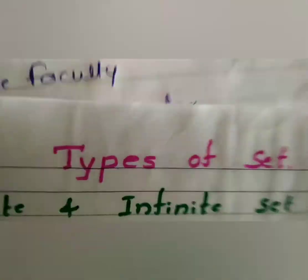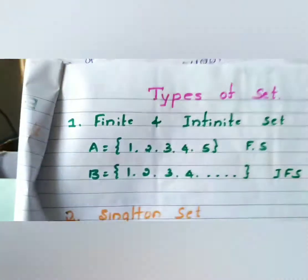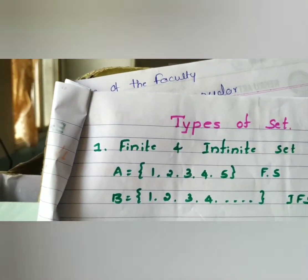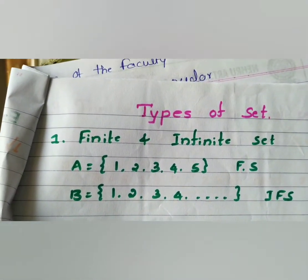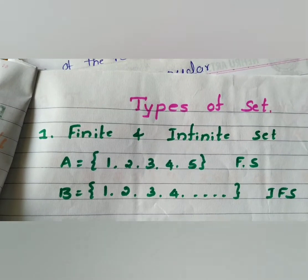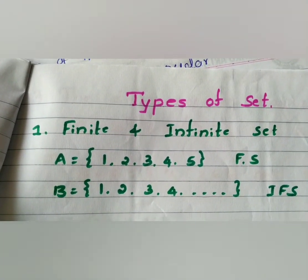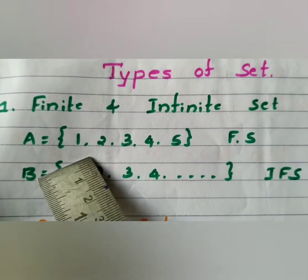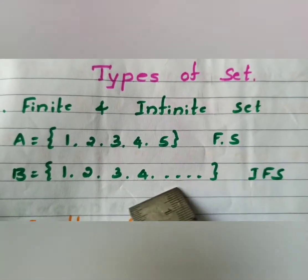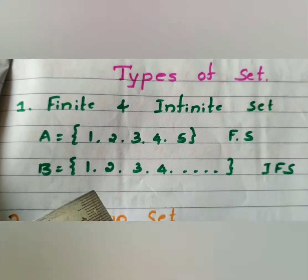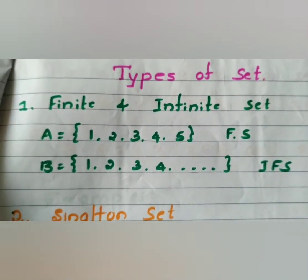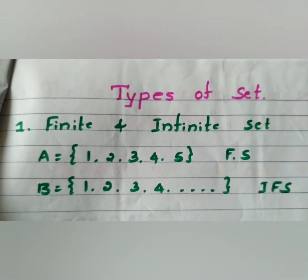Next, let us look at the types of sets. There are finite and infinite sets. For example, A = {1, 2, 3, 4, 5} has a limited number of elements and is called a finite set. If the set continues as {1, 2, 3, 4, ...} with no end, it is called an infinite set. A finite set has a definite number of elements; an infinite set has infinitely many elements.